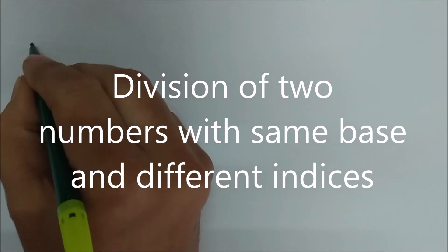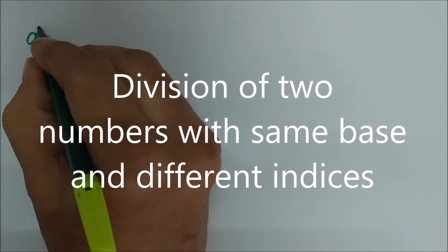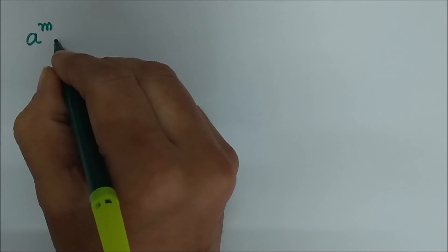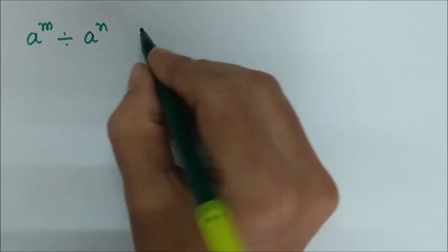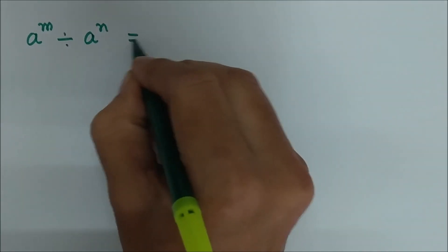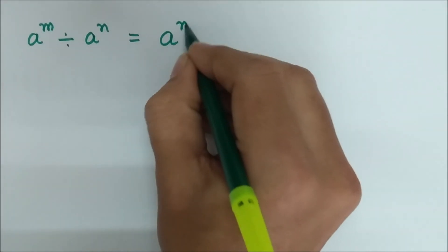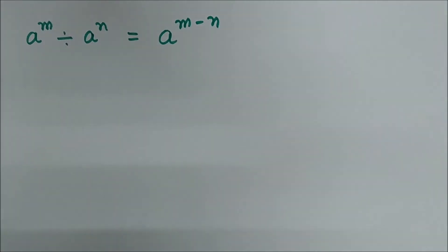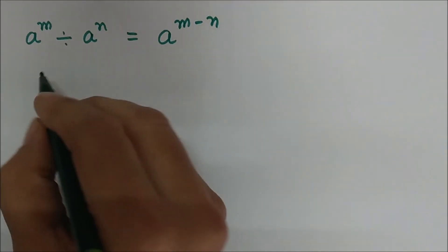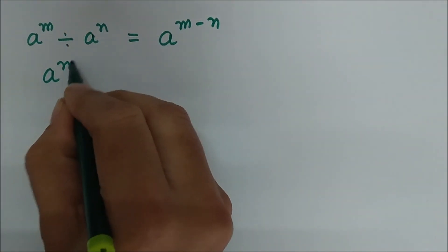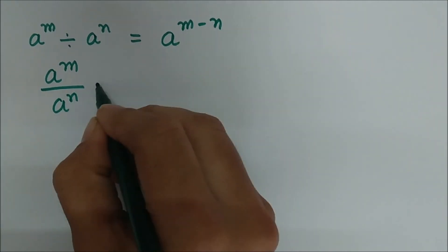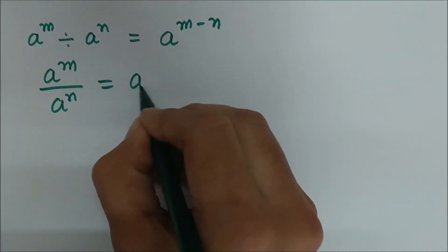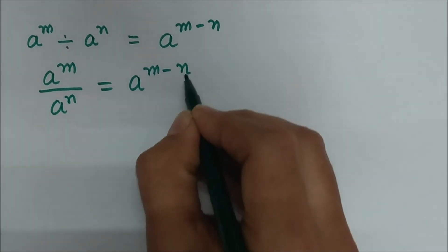The third law of indices is about division with the same base. If a raised to the power m is divided by a raised to the power n, it can be denoted as a raised to the power m minus n. The indices are simply subtracted. So: a raised to the power m divided by a raised to the power n equals a raised to the power m minus n.